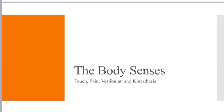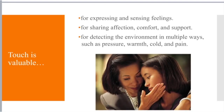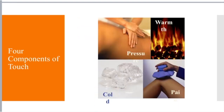The last sense is touch, which includes body senses: touch, pain, vestibular, and kinesthetics. Touch is valuable for expressing and sensing feelings, for sharing affection, comfort, and support, and for detecting the environment in multiple ways — pressure, warmth, cold, and pain. These are the four components of touch. They are our way to perceive the world around us and make sense of things that are painful, hot, uncomfortable, or cold.